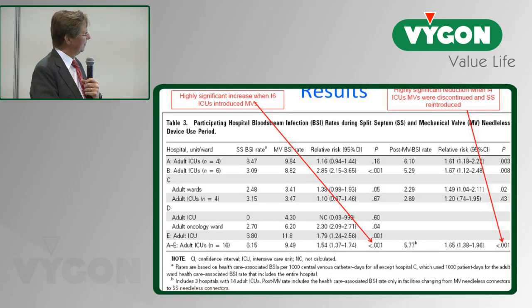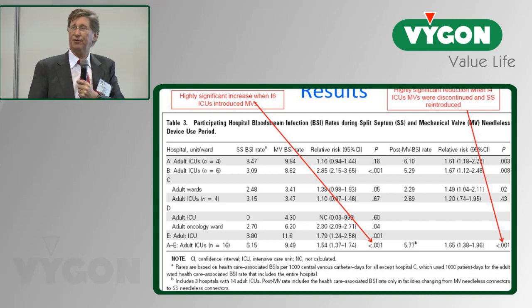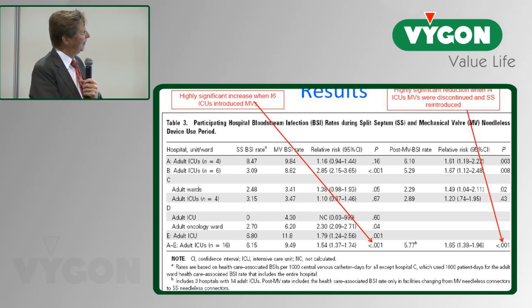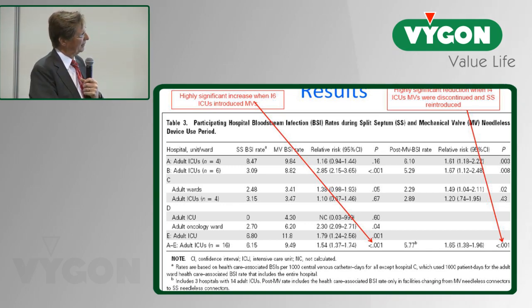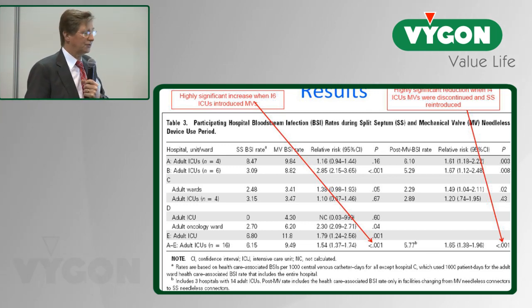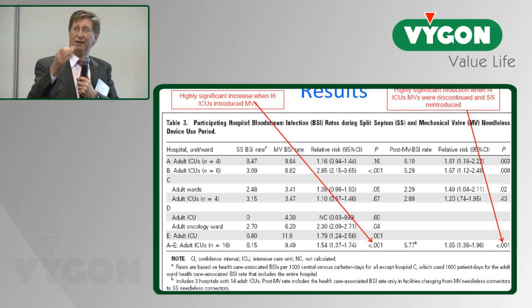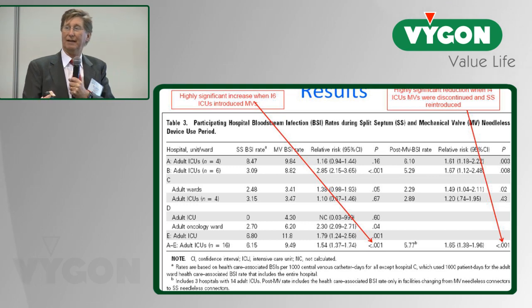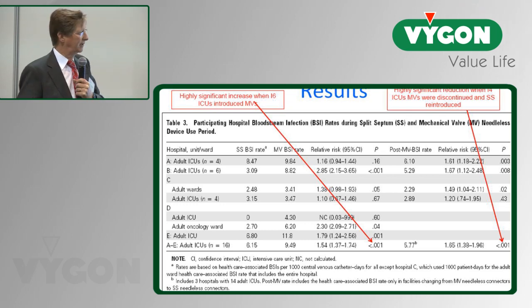When we look at data from the ICUs and wards, during the split septum time period the rate was about 6 per 1,000 catheter days. When they introduced the mechanical valves, it increased to about 9.5 per 1,000 catheter days. The hospitals that went back to split septum dropped below baseline levels. This showed very nicely that as you went from split septum to mechanical valve, the bloodstream infection rate went up despite enhanced infection control practices, and when they went back to split septum, the rate went down again.